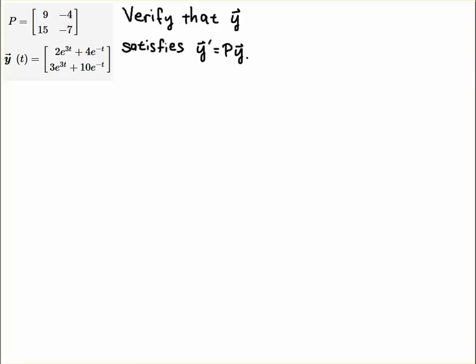Hello students. In this video, we're going to verify that this solution, this vector here, satisfies the first order linear system written as a matrix equation, y prime equals Py, where P is this matrix with these entries.